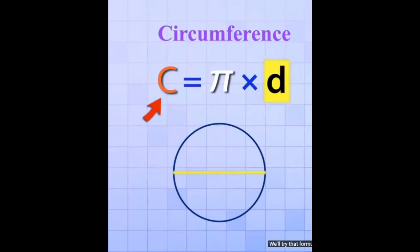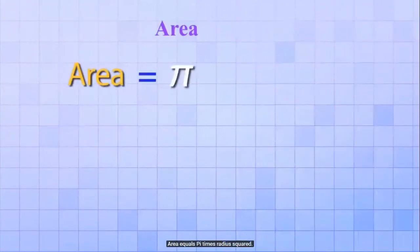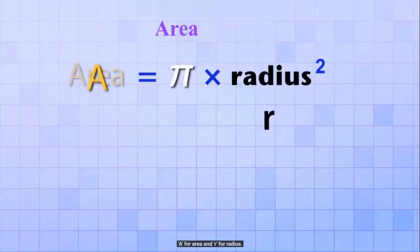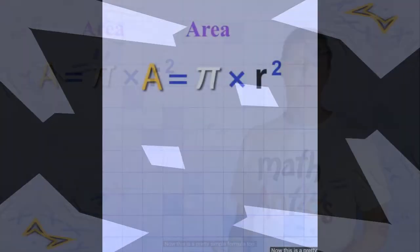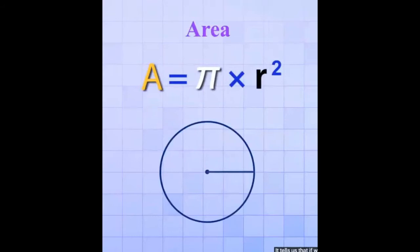We'll try that formula out in a few minutes, but first let's see the formula for area. The formula for finding the area of a circle is: area equals pi times radius squared. Again, we can use abbreviations to make it shorter — A for area and R for radius.